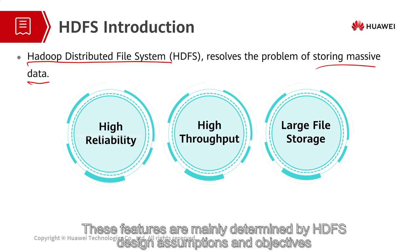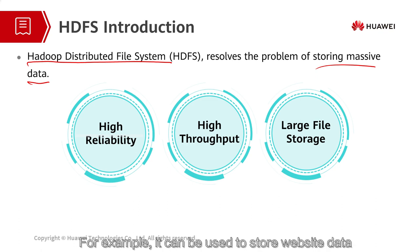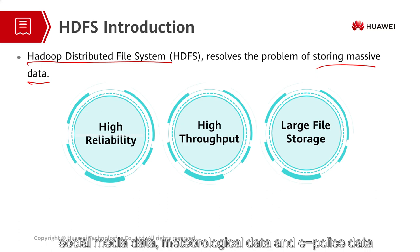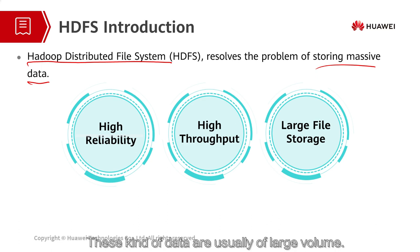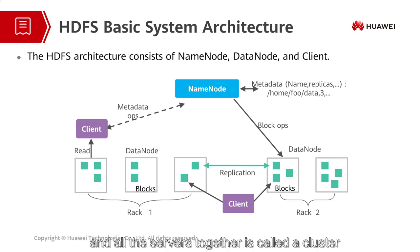These features are mainly determined by HDFS design assumptions and objectives. Thanks to these features, HDFS can be used in many different scenarios. For example, it can be used to store website data, social media data, meteorological data, and police data, etc. These kinds of data are usually of large volume. HDFS distributes data onto different servers, and all the servers together is called a cluster.